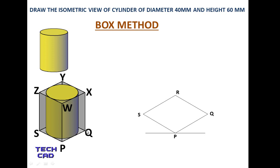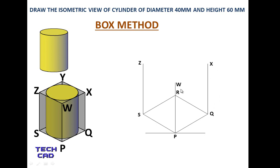In the same way, you draw WXYZ. The height of the box equals the height of the cylinder, which is 60 mm. Draw a line from P exactly orthogonal — at 90 degrees — to your reference line, with a length of 60 mm. This gives you point W. Similarly, join S to Z and Q to X, both 60 mm. Then join W to X, W to Z, giving you point Y and completing the box, which represents the isometric view of the box.